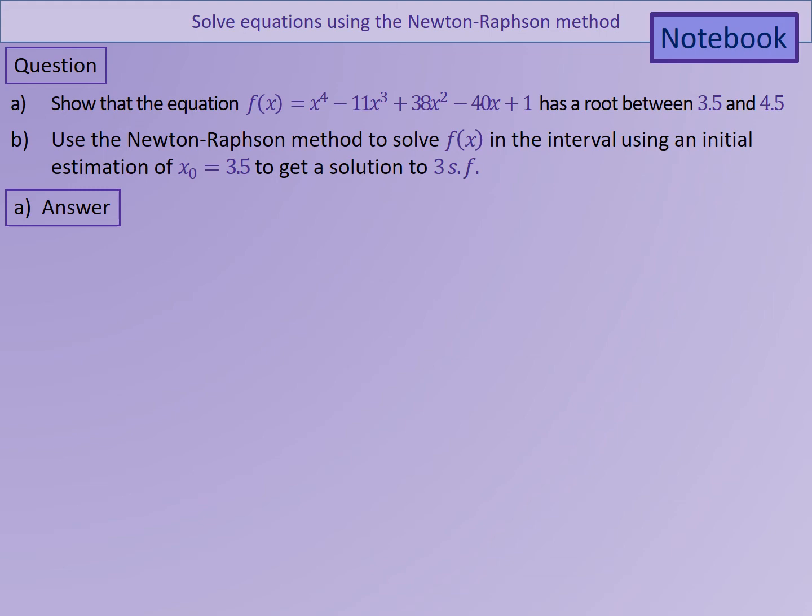The first bit is practicing finding routes, and the second part is being able to use the Newton-Raphson method. I'll give you an opportunity to just pause there if you need to. Part A is trying to find a route between two values. If I can find a route between 3.5 and 4.5, at least I've got an idea of where my initial approximation should be, so I'm not miles away to start with. I can then use one of those values to start to focus in a little bit better. So the first one is, how do I show a route is between two numbers?